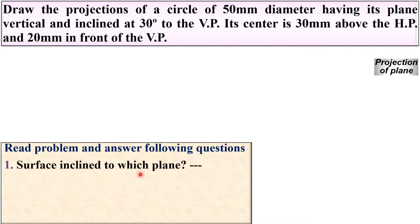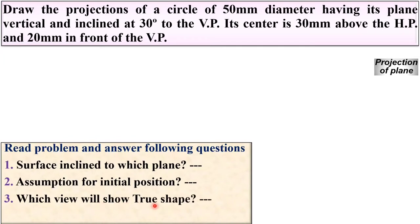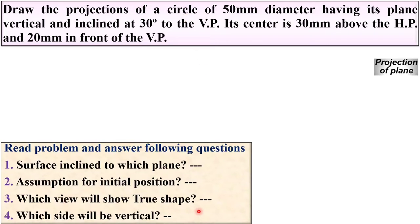First: which plane is the surface inclined to? Next: what is the assumption for the initial position — that means is the plane either parallel to HP or parallel to VP? Next: which view will show the true shape — either the front view or the top view? And last: which side will be vertical? Here, since it is a circular plate, there is no specific side. Now let us answer each question one by one.